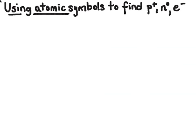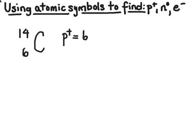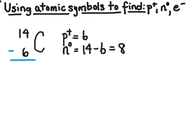Let's use atomic symbols to find protons, neutrons, and electrons. For carbon-14, the number of protons equals the atomic number 6. The number of neutrons is 14 minus 6, which is 8. Now the tricky part: how do I find the number of electrons? I've specified the structure of the nucleus, but haven't explicitly stated the number of electrons — though actually I have, you just don't see it yet.